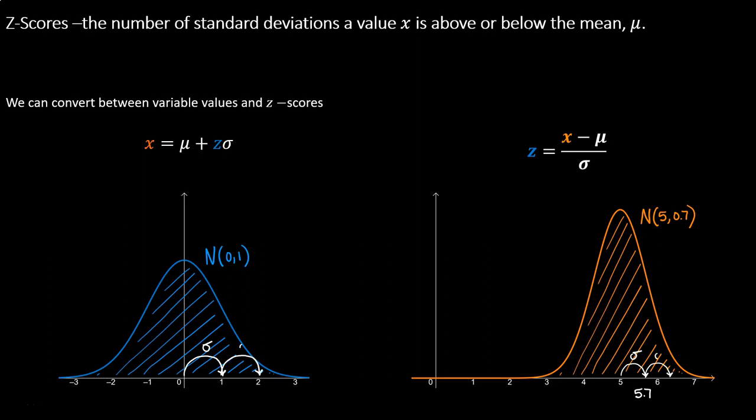If I traveled another standard deviation away from the mean, I would land on 2 for the standard normal curve, representing two standard deviations. On the orange curve that's different — if I started at the mean 5 and traveled to the right two standard deviations, I would land on 6.4. So the variable value 6.4 has a z-score of 2; it is 2 standard deviations above the mean.